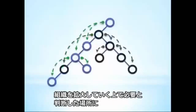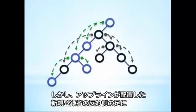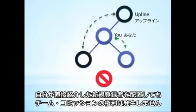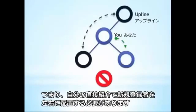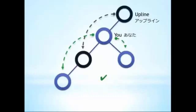One of the strengths of the binary is that in many cases upline sponsors will place people in your organization. But just because you have someone placed on one side of your tree doesn't mean you're qualified if you haven't placed someone on the other. You yourself need to enroll someone on each side.